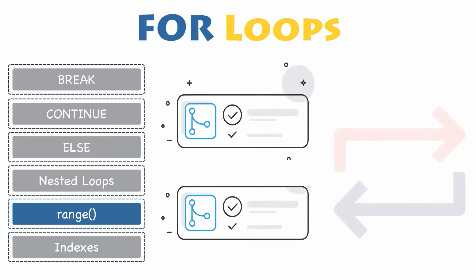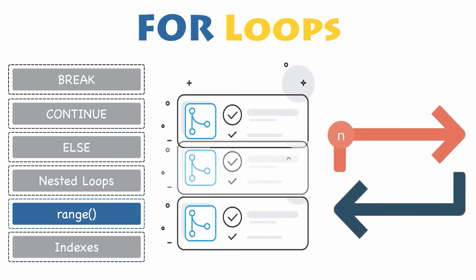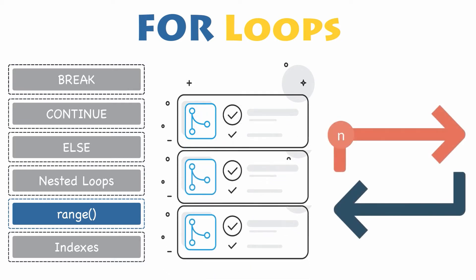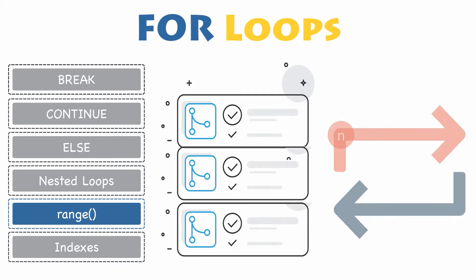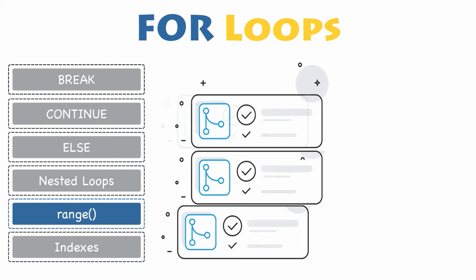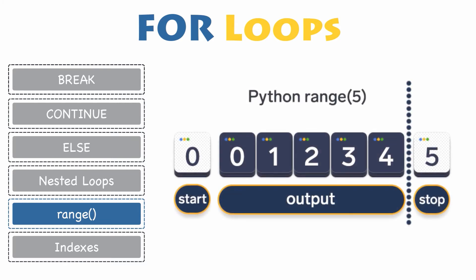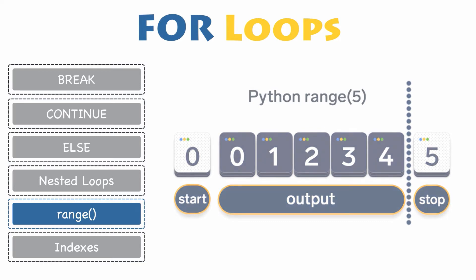In most cases, you would like to execute a group of statements for a fixed number of times. Fortunately, Python provides a very simple way to repeat an action for a specific number of times: the built-in function range, which generates a sequence of numbers from zero up to but not including a specified number.